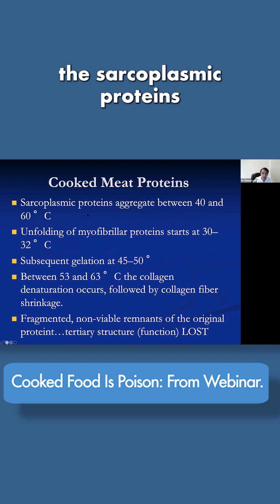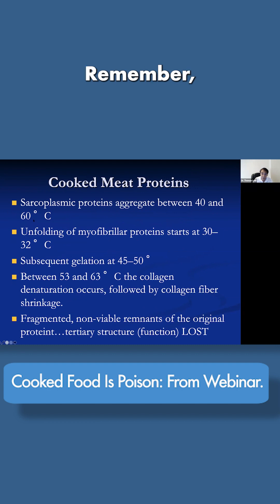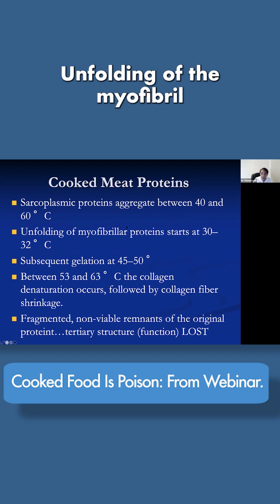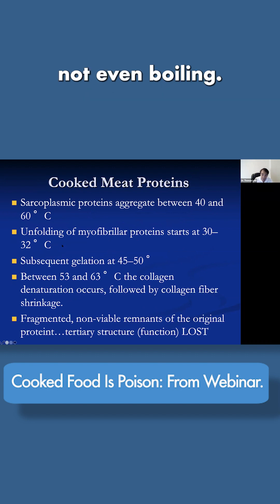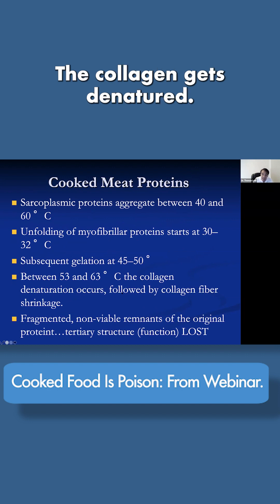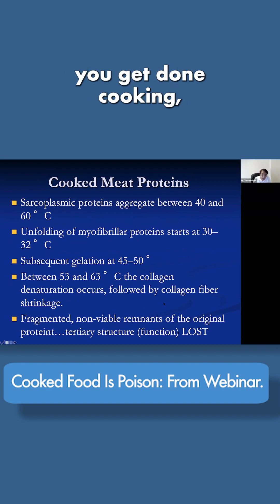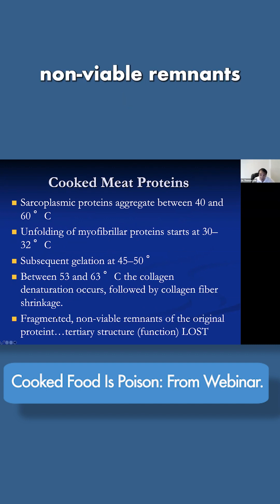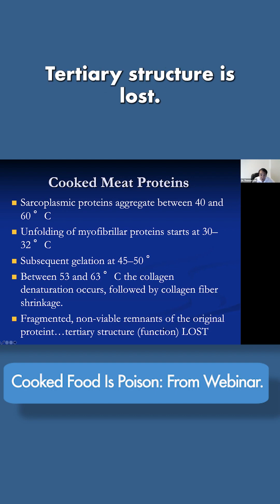This is what happens with cooked meat. The sarcoplasmic proteins aggregate at between 40 and 60 degrees centigrade — that's not even boiling. Unfolding of the myofibrillar protein starts at 30 to 32 degrees centigrade — not even boiling. Subsequent gelation happens at 40 to 50. Collagen gets denatured. What you're eating after cooking is not what you started with — the fragmented, non-viable remnants of the original protein tertiary structure is lost.